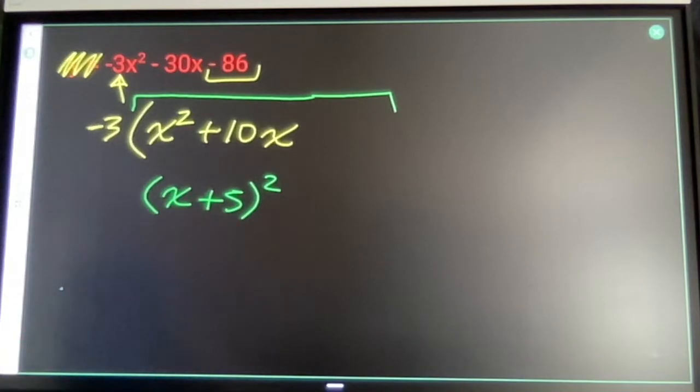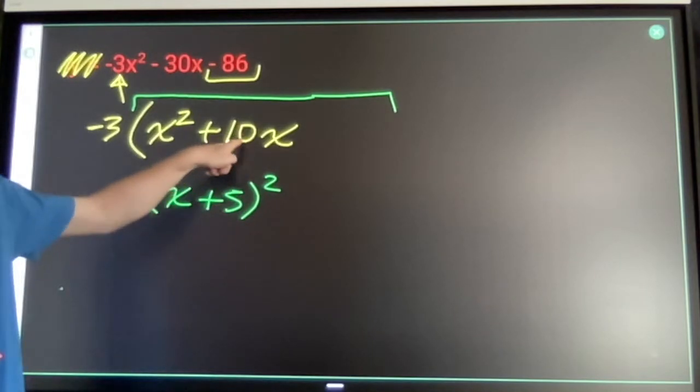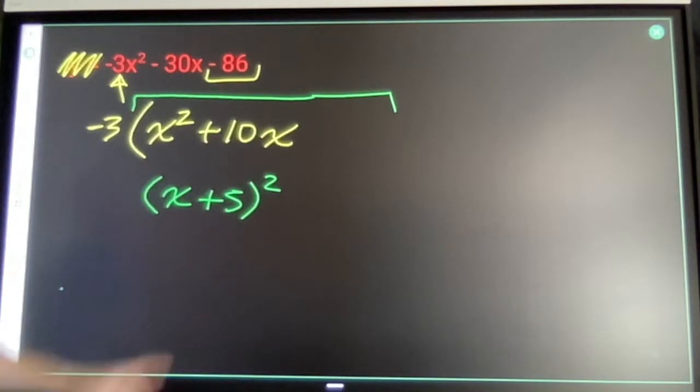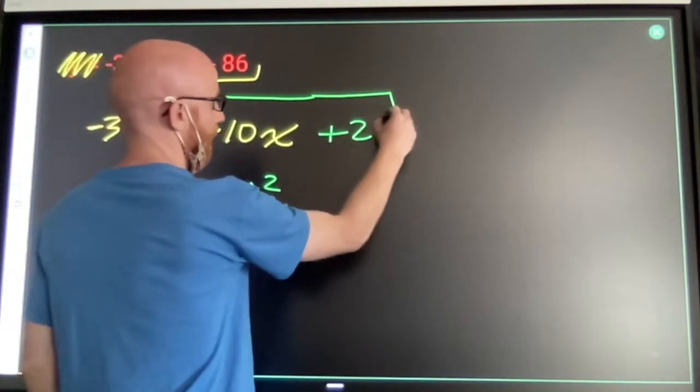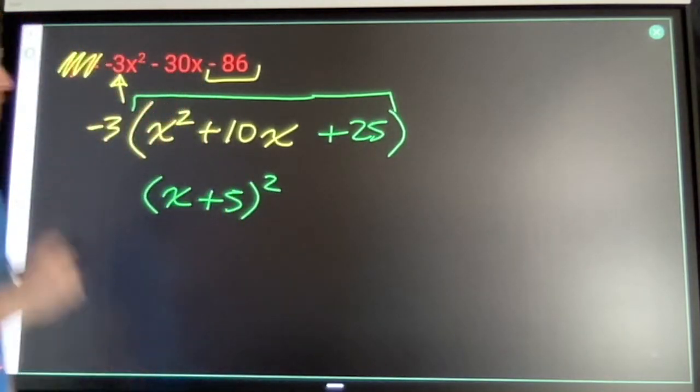x plus 5 times x plus 5. It's going to give me my x squared, and it's going to give me 5x's twice to give me my 10x. It's also going to give me a 25. So I need a 25 in this parentheses.